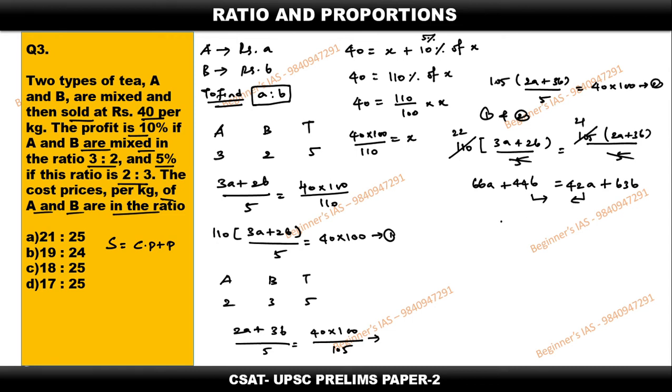66a minus 42a which is nothing but 24a, so this is equal to 63b minus 44b. This is nothing but 19b. We need to identify a by b. So therefore a by b is equal to 19 by 24.